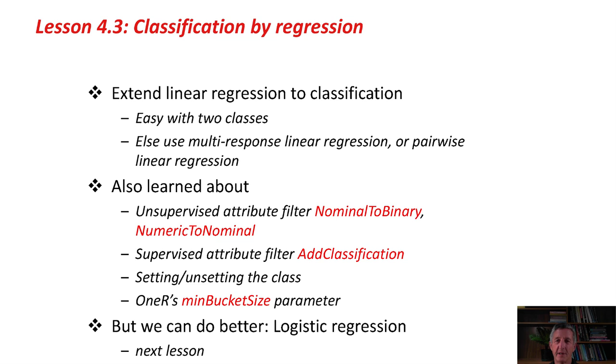We learned quite a few things about Weka. We learned about unsupervised attribute filters to convert nominal attributes to binary, and numeric attributes back to nominal. We learned about this cool filter add classification, which adds the classification according to a machine learning scheme as an attribute in the data set. We learned about setting and unsetting the class of the data set, and we learned about the minimum bucket size parameter to prevent 1R from overfitting.